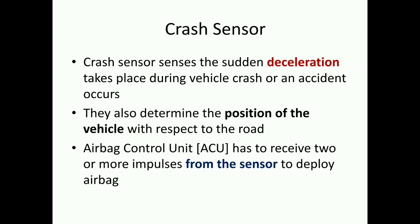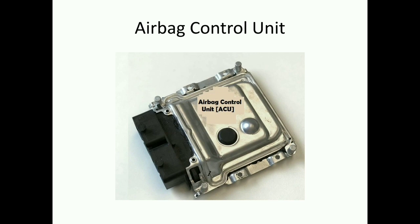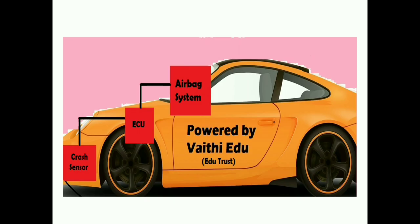The airbag control unit has to receive one or more impulses from the sensor to deploy the airbag. The airbag system has to inflate, so it collects information from the crash sensor — things like how fast the deceleration occurs and the position of the road. This information flows from the crash sensor to the ECU, and from the ECU to the airbag system. The crash sensor sends deceleration signals and car position data to the ECU, which processes it and sends it to the airbag system.